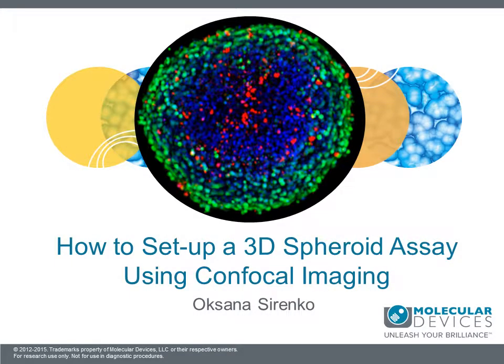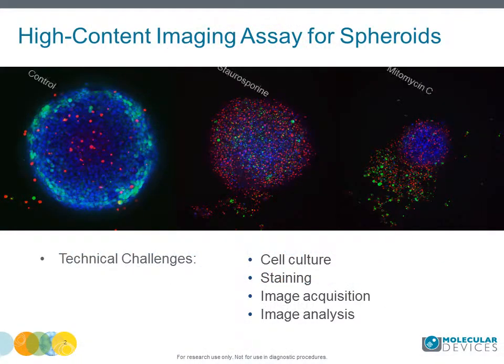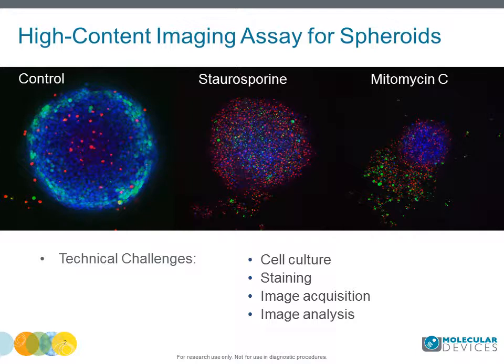How to set up a spheroid assay using confocal images. 3D cultures are believed to have the advantage of better representation of human tissues, including architecture, organization, and cell interaction.